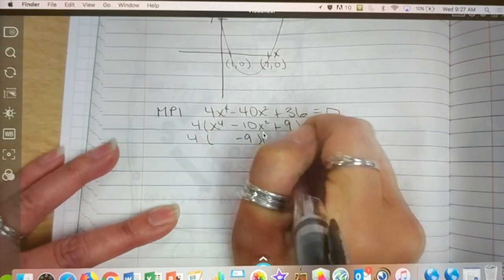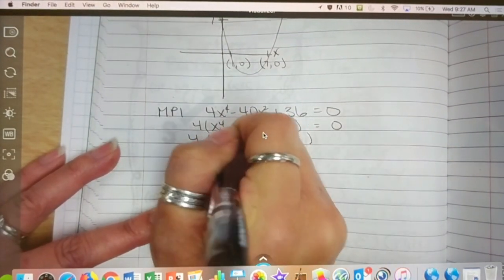Minus 10x squared plus 9. Okay, negative 9 and negative 1. And what's the first term? X squared. Very good.